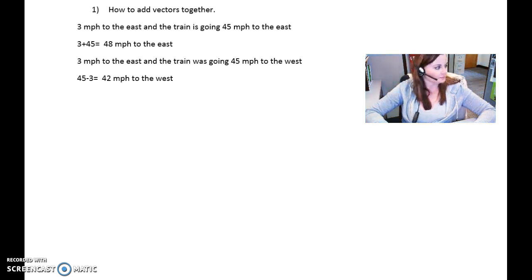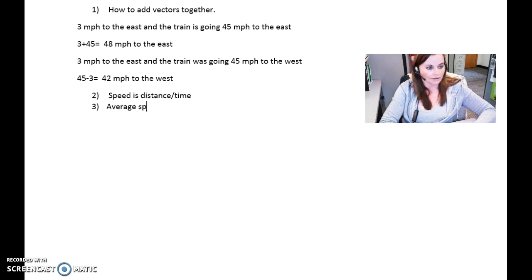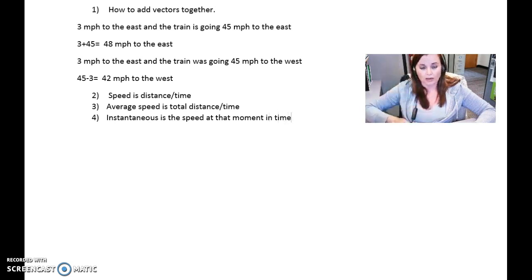Another question you have to know is: speed is distance divided by time. Average speed is total distance divided by time, whereas instantaneous speed is the speed at that moment in time.